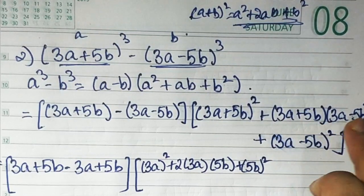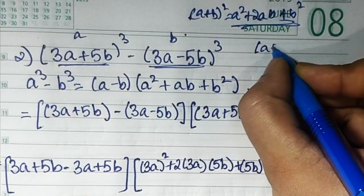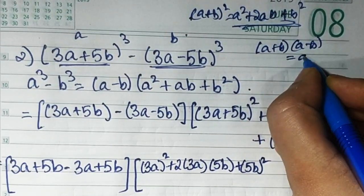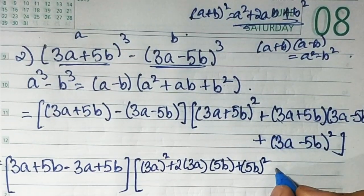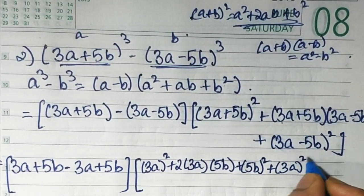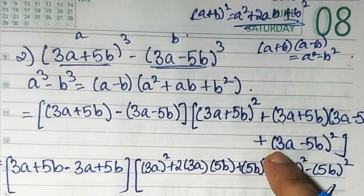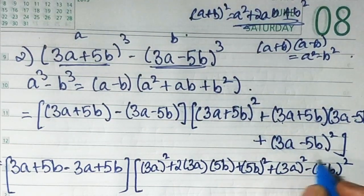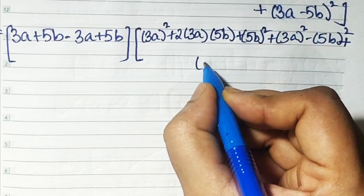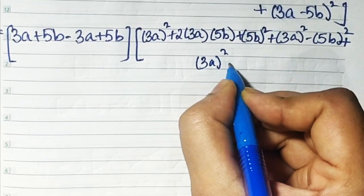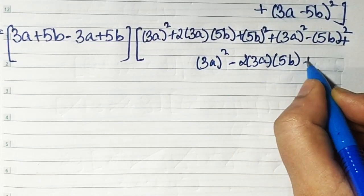Then (3a + 5b)(3a − 5b) uses the a plus b times a minus b formula giving a square minus b square, so it becomes 9a square minus 25b square. Plus (3a − 5b) whole square using a minus b whole square formula gives 9a square minus 30ab plus 25b square.